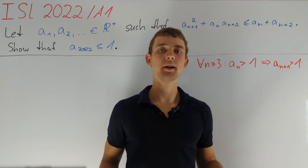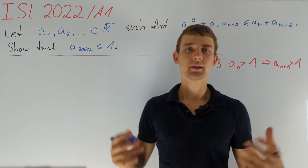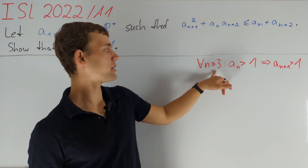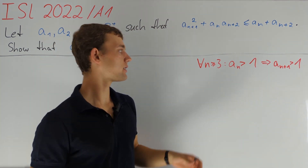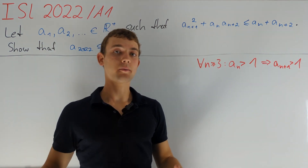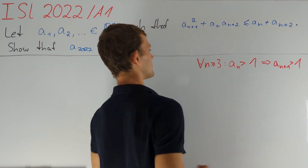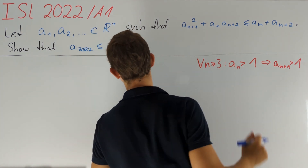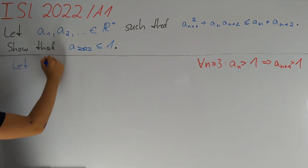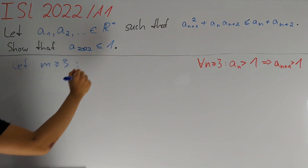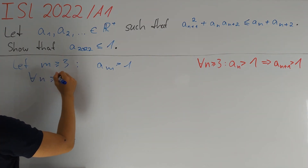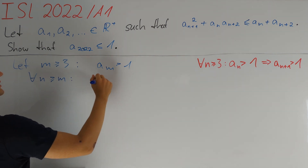At this point it becomes clear how we want to finish. There's nothing much special about 2022 except that it is greater than or equal to three. We want to show we can't find an integer m ≥ 3 with aₘ > 1, because otherwise all larger indices would also satisfy aₘ′ > 1. So assume we find such an m ≥ 3 with aₘ > 1. By induction, all integers n ≥ m must share the same property.